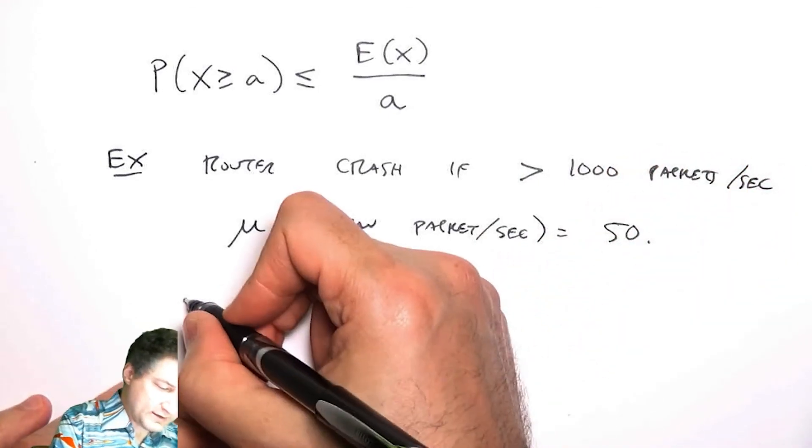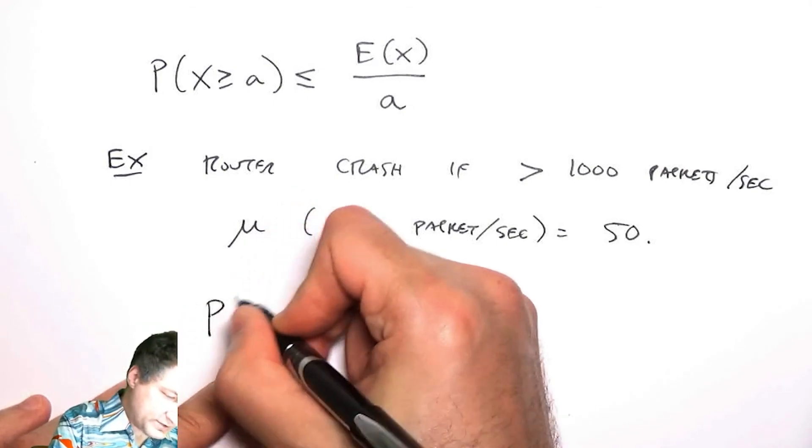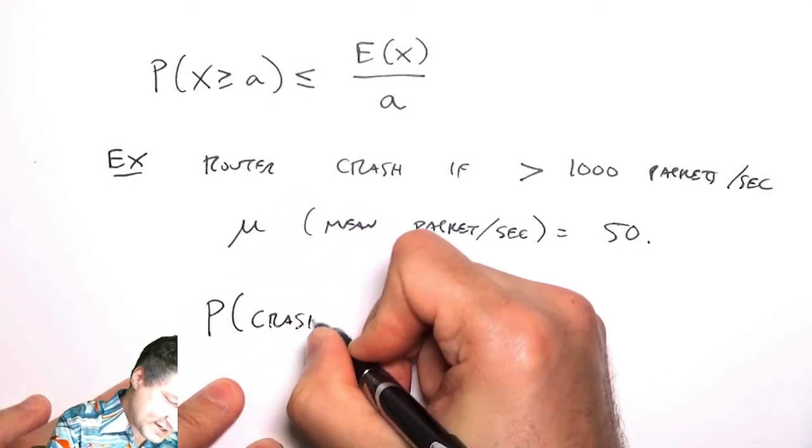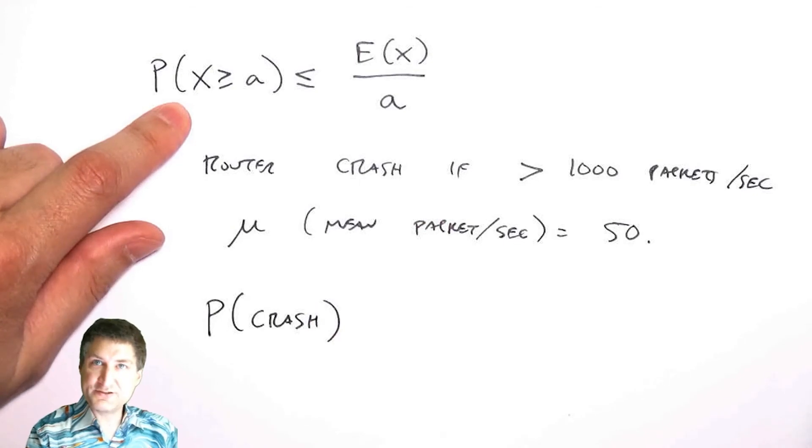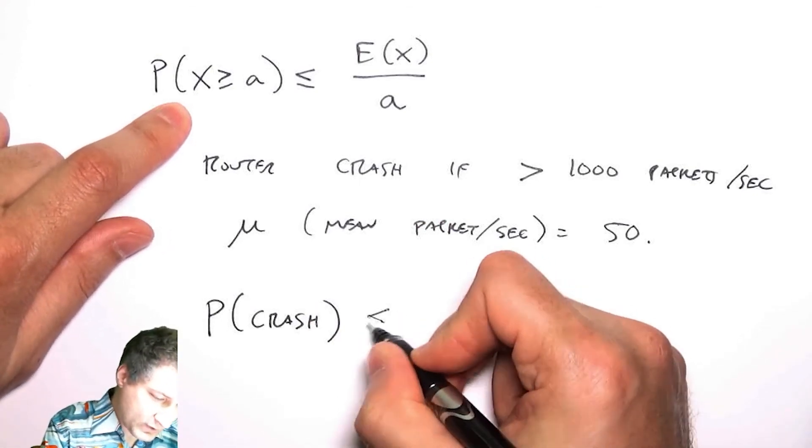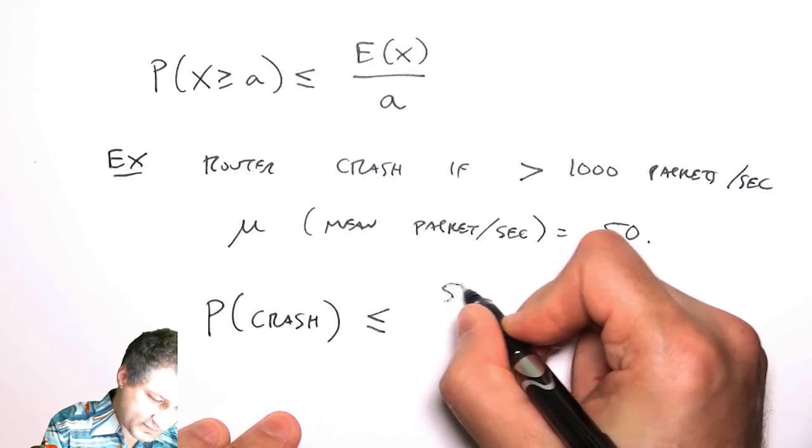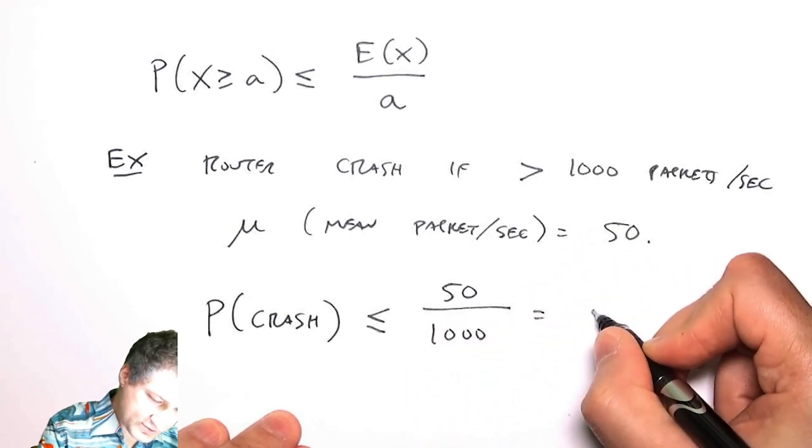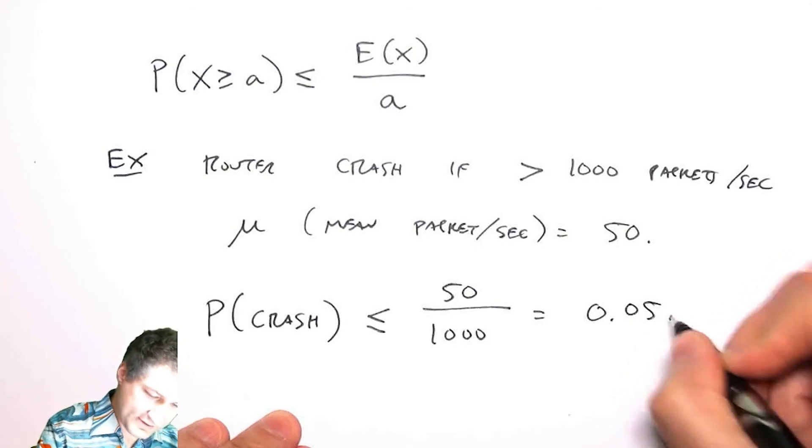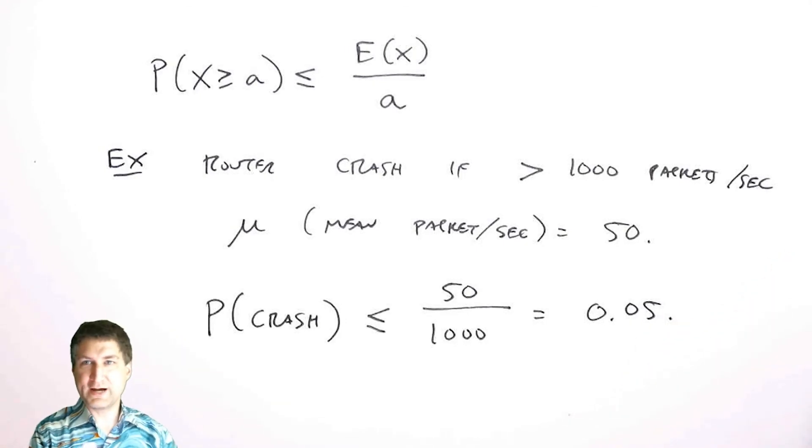Can I bound the probability of crash? That's like asking what's the probability that this number is greater than a thousand. Well, it's no more than the mean, which is 50, over a thousand, which is 0.05. This is pretty useful. I don't need to know anything about the distribution of the packets. All I need to know is that I can bound the probability of crash.